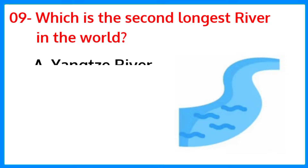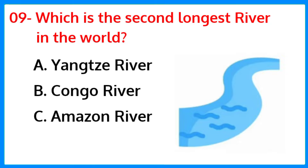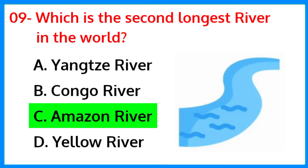Which is the second longest river in the world? The correct answer is option C — Amazon River.